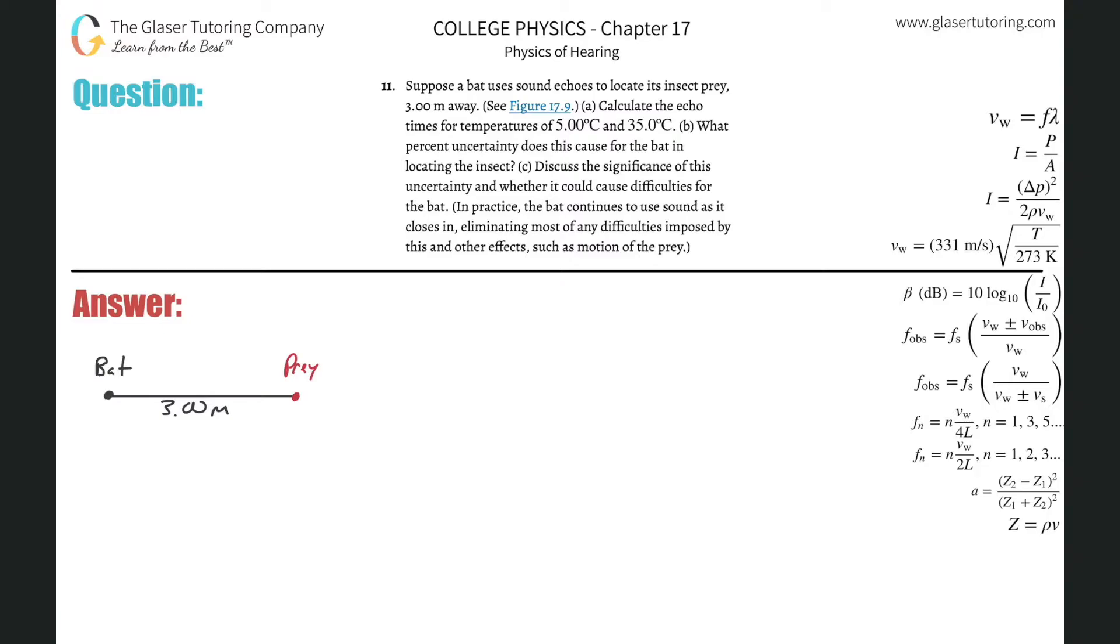Number 11. Suppose a bat uses sound echoes to locate its insect prey 3 meters away. Calculate the echo times for temperatures of 5 degrees Celsius and 35 degrees Celsius.